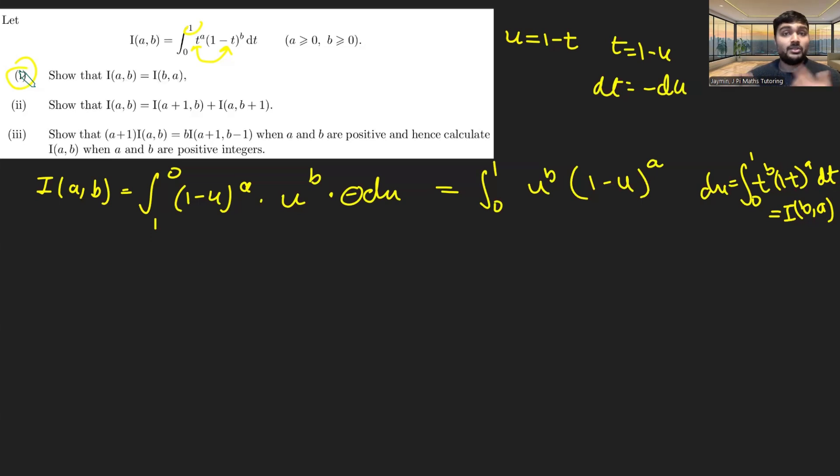Which is precisely I(b,a). And so we prove, we solve part one here. So the trick is to just do a substitution. And the motivation here to do a substitution is you kind of want to swap the t and the 1 minus t, and doing this substitution allows you to do that.